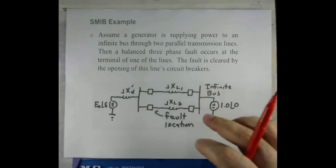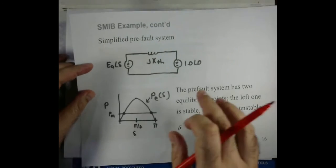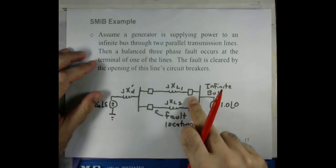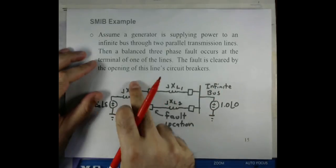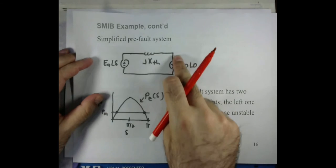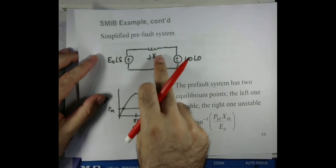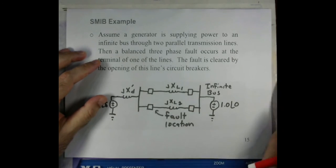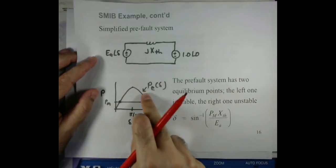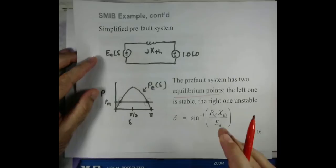For the pre-fault analysis, since the two transmission lines are in parallel, we find their equivalent inductive reactance using the parallel combination formula. Adding the equivalent transmission line reactance to the generator transient reactance X'd gives the total reactance X_th. This gives us the simplified pre-fault system: the generator connected to the infinite bus through X_th. The pre-fault system has two equilibrium points on the power-angle curve.